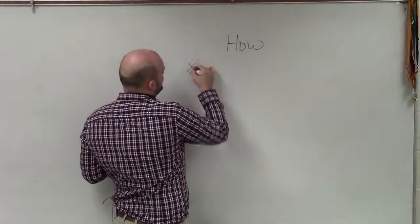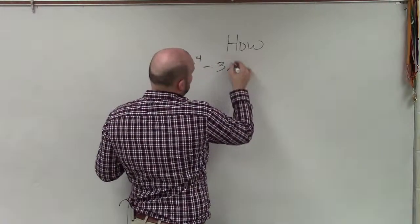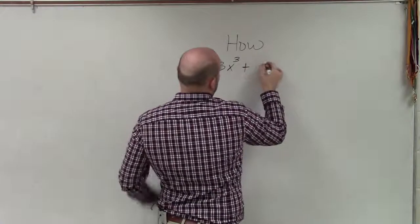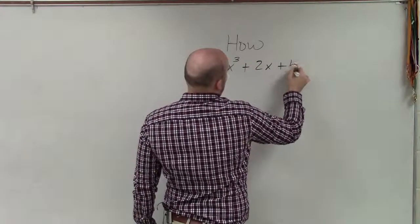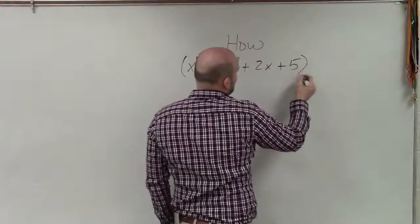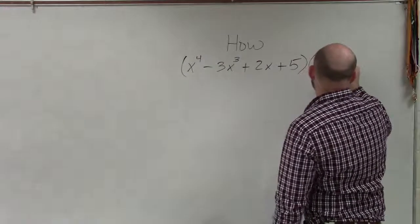So let's just kind of do x to the fourth minus 3x to the cubed plus 2x plus 5. And I'm going to take this polynomial and I'm going to divide it by x minus 3.